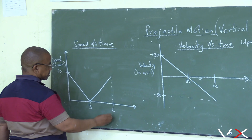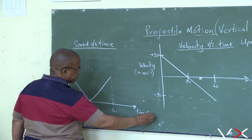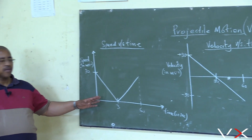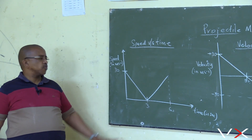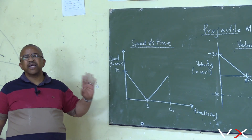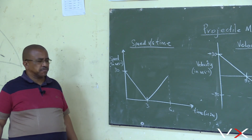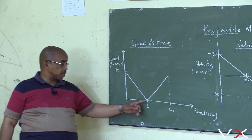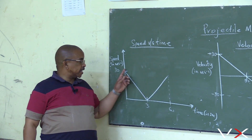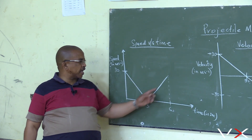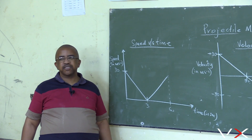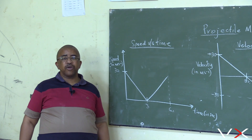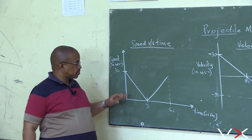At three seconds, then six. Time in seconds. For the speed-time graph, we don't consider direction. We just look at the magnitude. Speed starts at 30 meters per second, goes to zero, then back to 30. From zero it goes back to 30. The slopes are going to be the same. The acceleration is the same. So that is the speed-time graph.